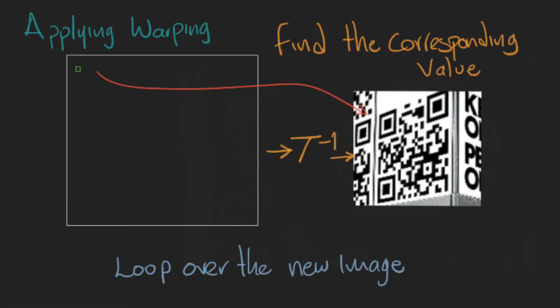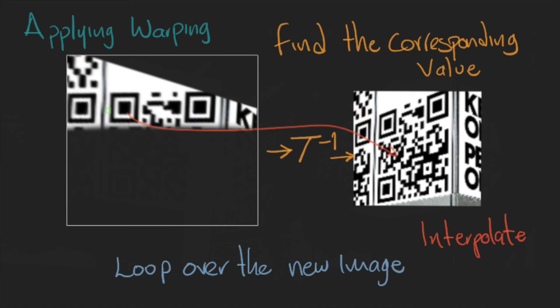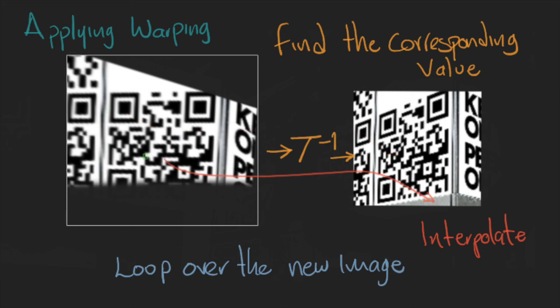For each pixel, we use the inverse warp to find the location in the picture that corresponds to the pixel in the new image. We either take the neighbor, or we interpolate, and then we write the value.